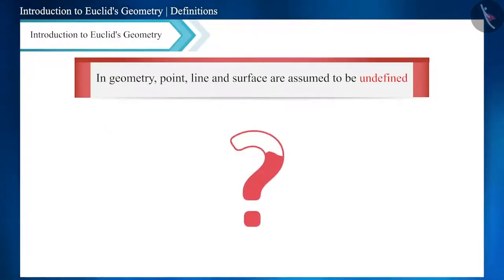Let's start with a question. Friends, in geometry, why do we consider a point, a line, and a plane as undefined terms? Do you know the reason?